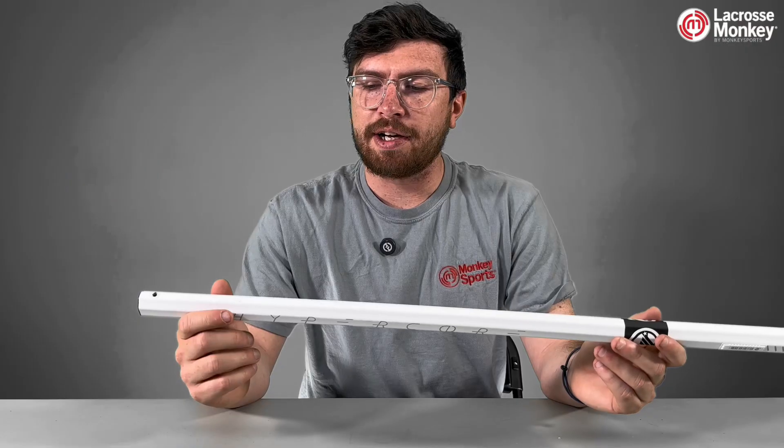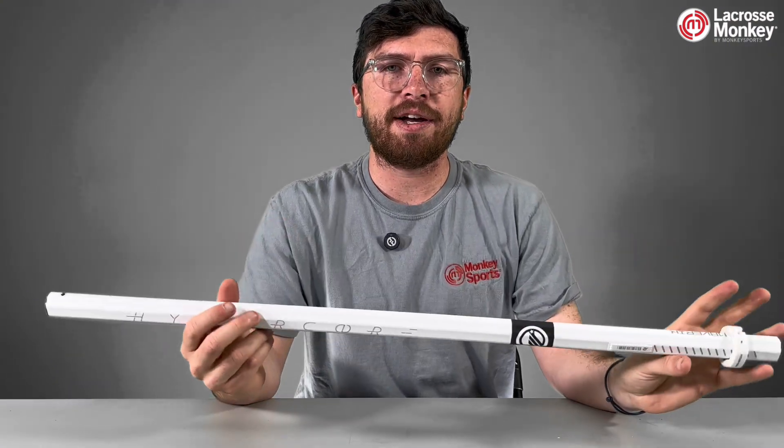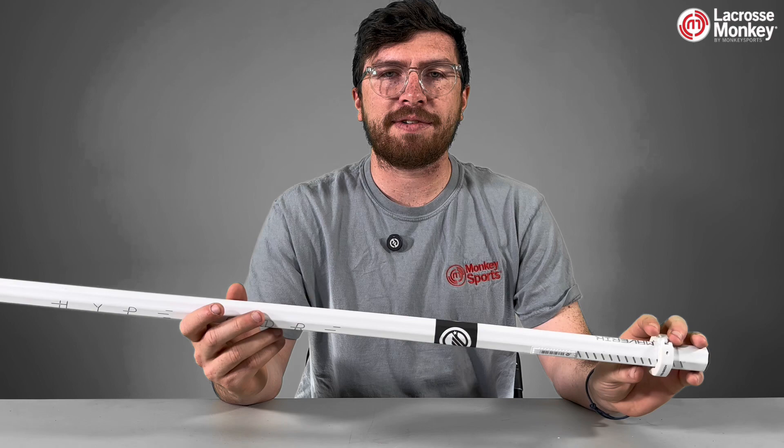Something interesting about the HyperCore is it actually has this I-beam going down the middle of the shaft. This makes it have zero flex, giving you a ton of accuracy on those outside shots or those inside finishes.